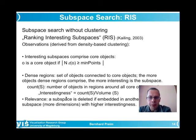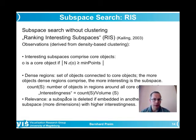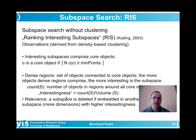A subspace is dropped if it is embedded in another subspace with higher interestingness. A two-dimensional subspace may be interesting, but if adding a dimension increases the interestingness value, the two-dimensional subspace is no longer very relevant. Low-dimensional subspaces are embedded in higher-dimensional ones, and it is typically sufficient to look at the higher-dimensional subspace if interestingness increases.